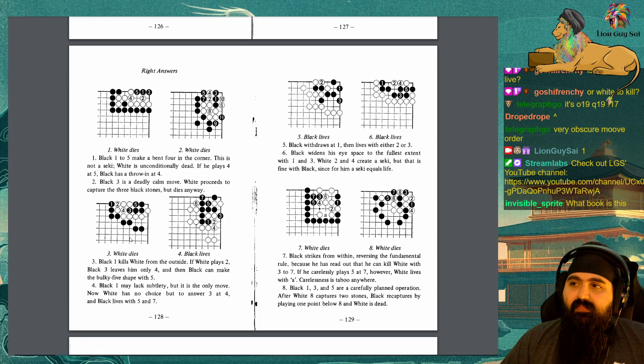Right answers. 1. Black 1 to 5 make a bent 4 in the corner. This is not a seki. White is unconditionally dead. If he plays 4 at 5, Black has a throw-in at 4. 9. Black 3 is a deadly calm move. White proceeds to capture the 3 Black stones, but dies anyway. 10. Black 1 kills White from the outside. If White plays 2, Black 3 leaves him only 4, and then Black can make the bulky 5 shape with 5. 4. Black 1 may lack subtlety, but it is the only move. Now White has no choice but to answer 3 at 4, and Black lives with 5 and 7.